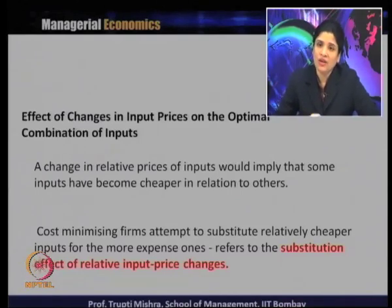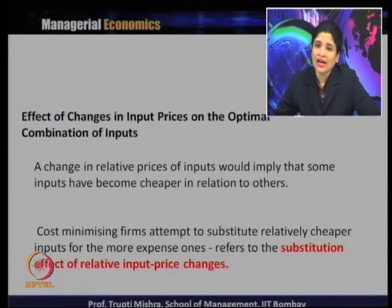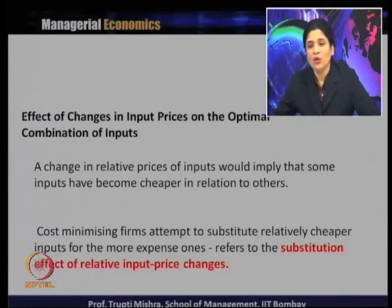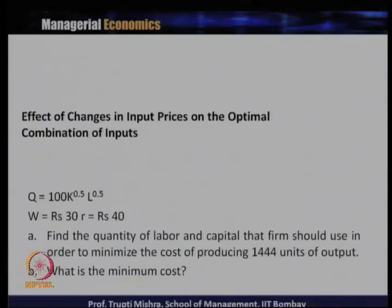Whenever the price of one input changes, it becomes cheaper with respect to the other inputs, and the cost-minimizing producer generally tries to replace the expensive input with the cheaper one. This is known as the substitution effect of relative input price change. We will look at the graphical representation of how a change in input prices affects the least cost input combination and the level of output.